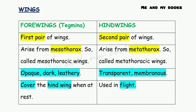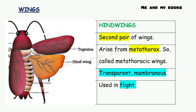The hind wings are the second pair of wings, arising from the metathorax and so called metathoracic wings. They are transparent and membranous — soft wings — and they are used in flight. Cockroaches can fly short distances using their hind wings.